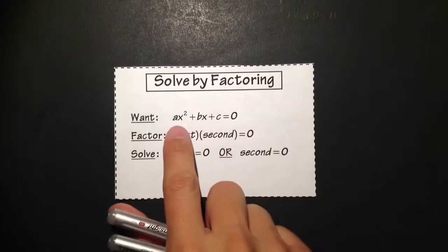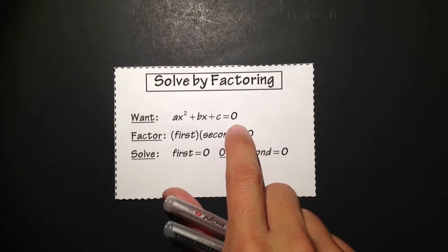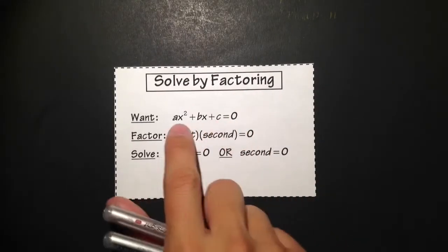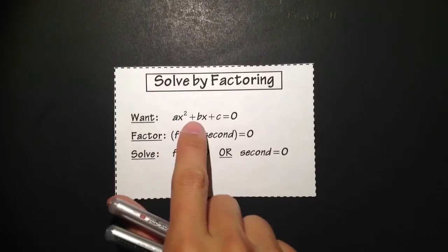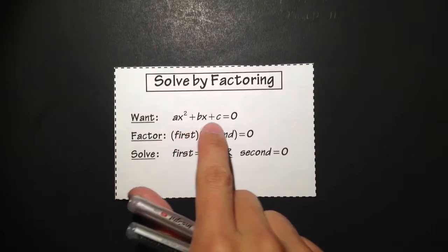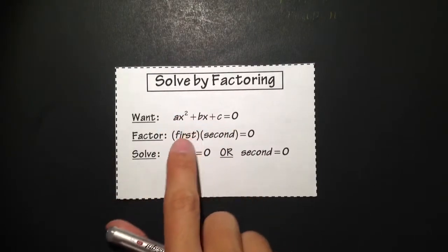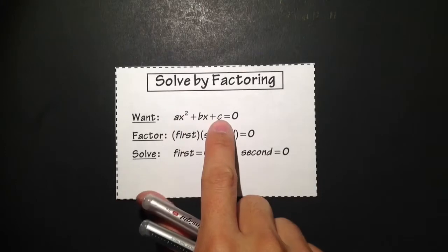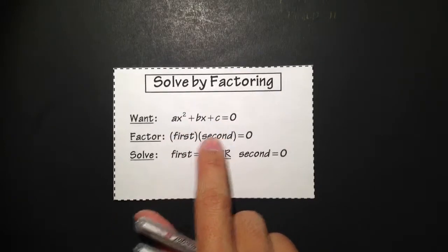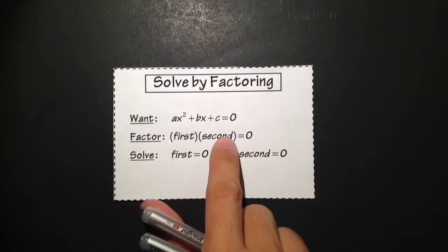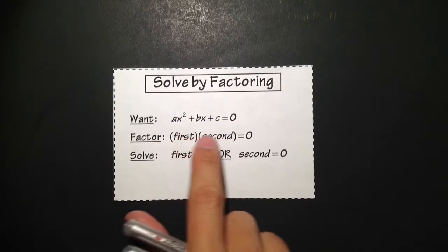The idea is that you want to make one side equal to zero, and you want to have the form ax squared plus bx plus c in this order, and then you want to break this down into two factors — like two parentheses, and inside you should just have linear factors.